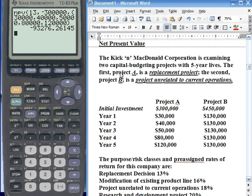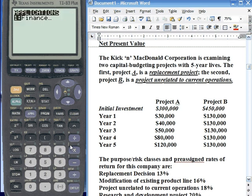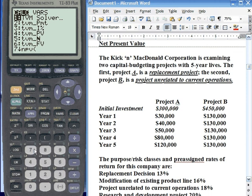Alright, thanks Arnold. You're welcome. Project B. We have to look at the interest rate to use for that, which is projects unrelated to current operations, which down here is 18%. So we're going to go back to our apps, finance, and net present value.